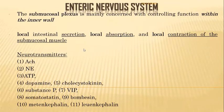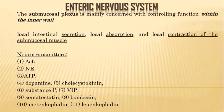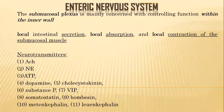Neurotransmitters that affect the enteric nervous system include acetylcholine, norepinephrine, ATP, dopamine, cholecystokinin, substance P, vasoactive intestinal peptides, somatostatin, bombesin, met-enkephalin, and leu-enkephalin. These neurotransmitters have various effects on the function of the myenteric and submucosal plexuses.